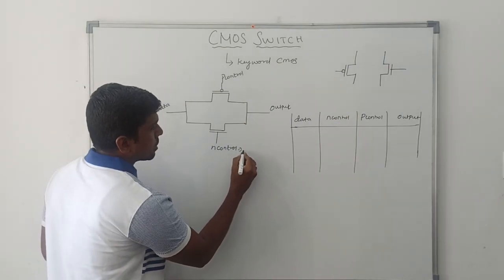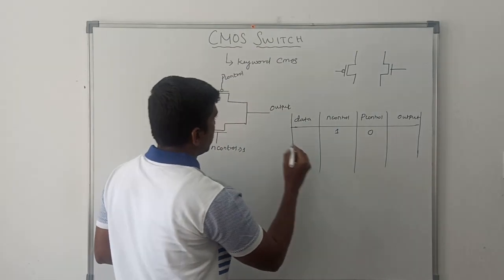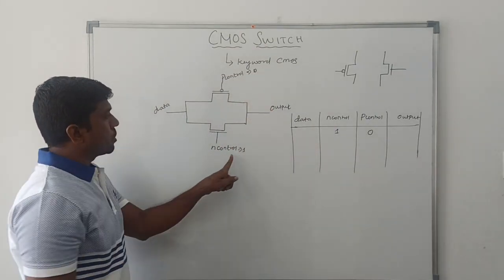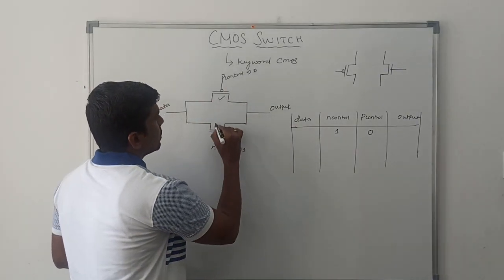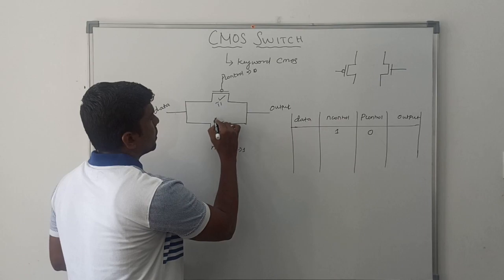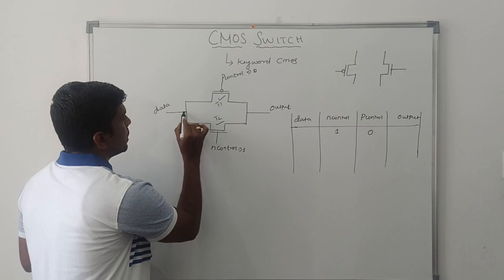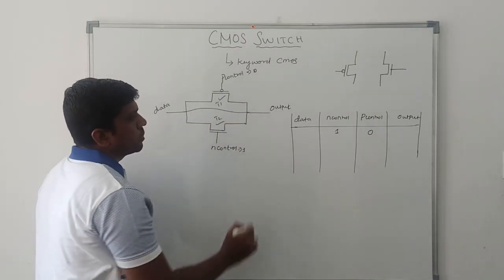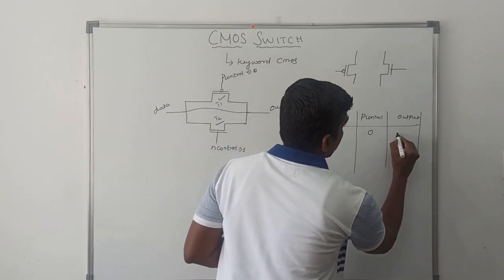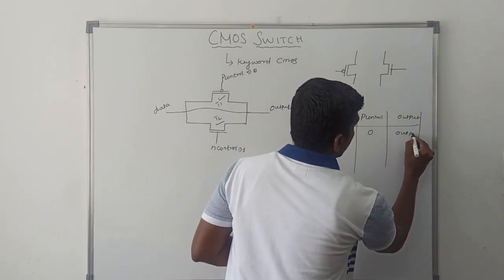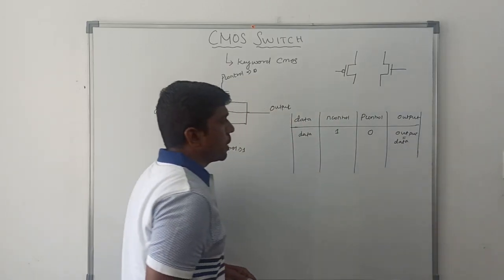Let me assign N control equal to 1, P control equal to 0. N control signal is 1, P control signal is 0. In this case, this transistor turns on - T1 and T2. Both the transistors are turned on. If both the transistors are turned on, the data is connected to output. This data is connected to output. Output equals data.